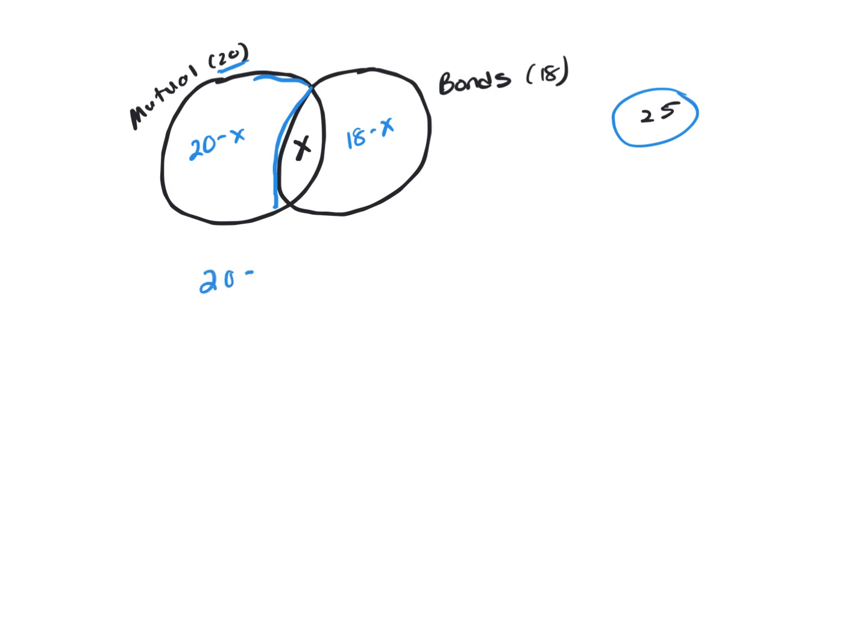So if you add up the mutual fund people plus the ones that invest in both plus the ones that invest in bonds, you should get a total of 25.